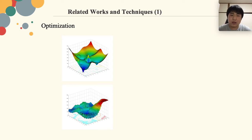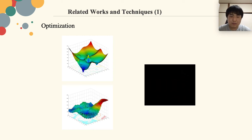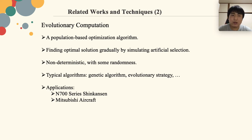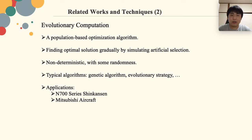The problem we face is more likely to explore and exploit an optimal solution in a black box. Evolutionary computation is a good solution to this type of black-box searching problem. It is a population-based optimization algorithm that can find the optimal solution gradually by simulating artificial selection. In evolutionary computation, an initial set of candidate solutions are generated and iteratively updated. Each new generation is produced by stochastically removing less desired solutions and introducing some random changes.